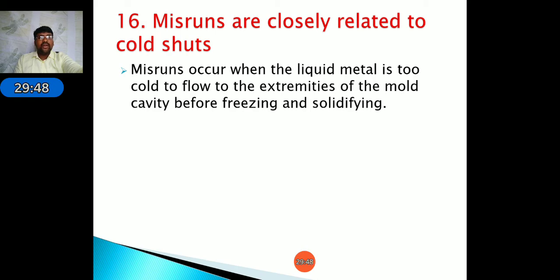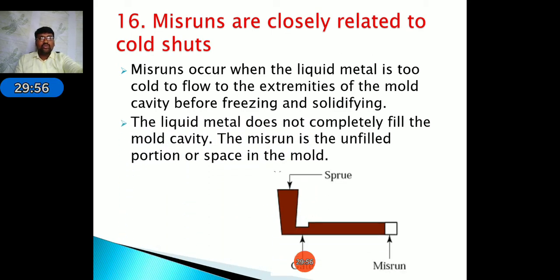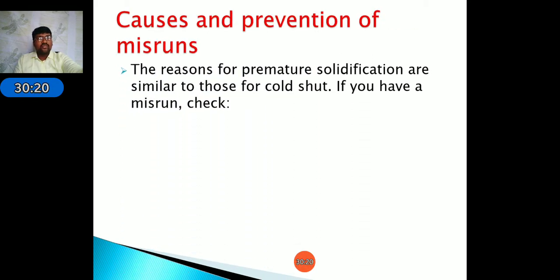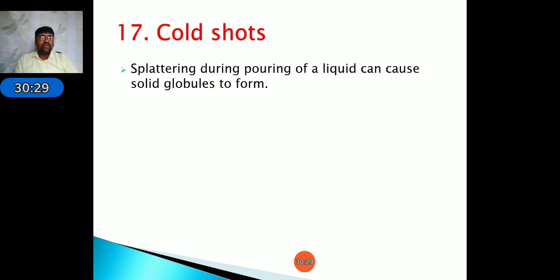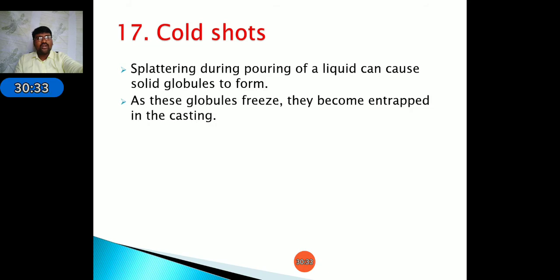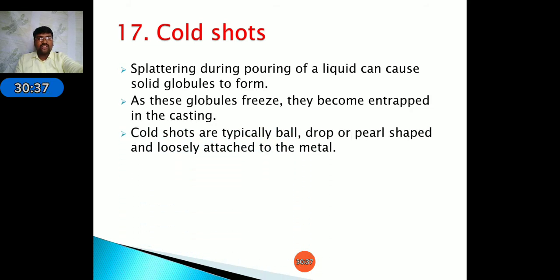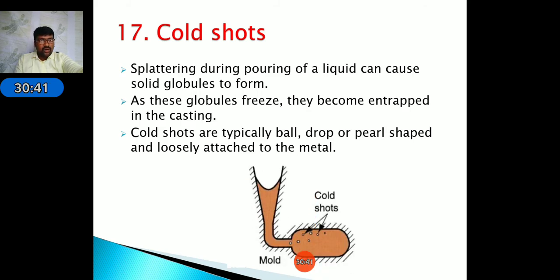Misruns are closely related to cold shots — they occur when the metal is too cold and the molten metal cannot reach the edges of the mold, leaving unfilled sections. Cold shots can also form due to splattering during pouring of molten metal, where small particles fall on the molten metal, creating small solid round-shaped particles. Causes and prevention of cold shots include modifying the pouring process and adjusting gating system design.